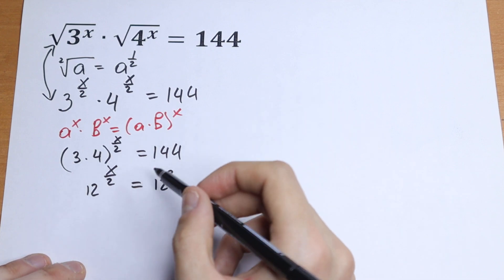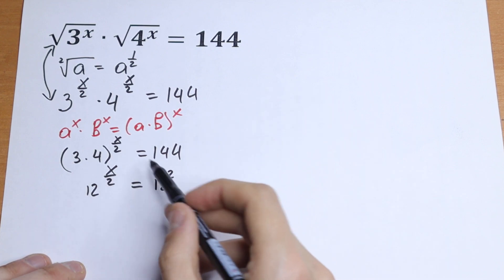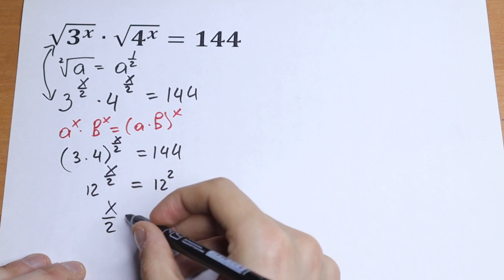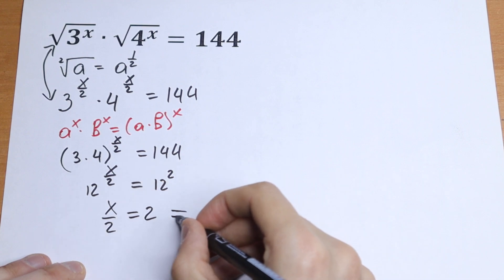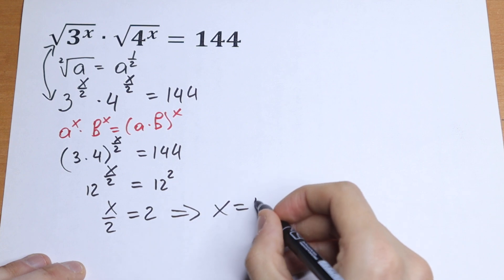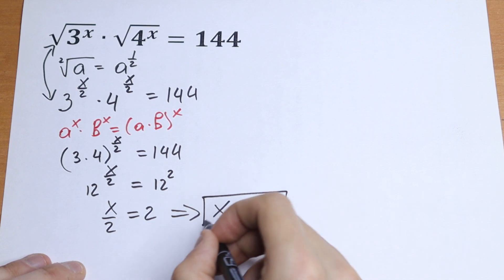Really good case right now because we have same bases, but we need to write an equation only with our exponent: x over 2 equal to 2. And from here x equal to 4. And this is the solution to this equation.